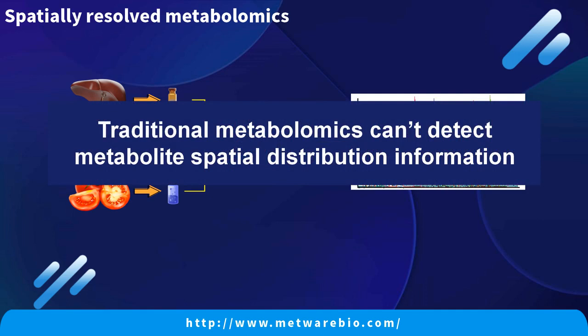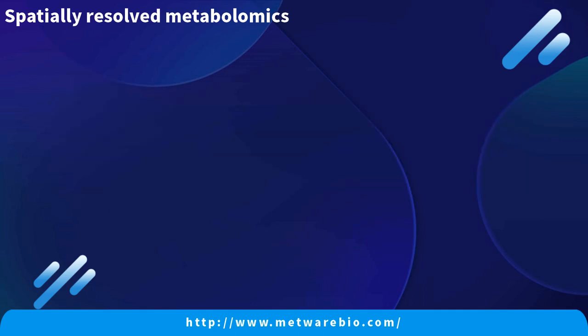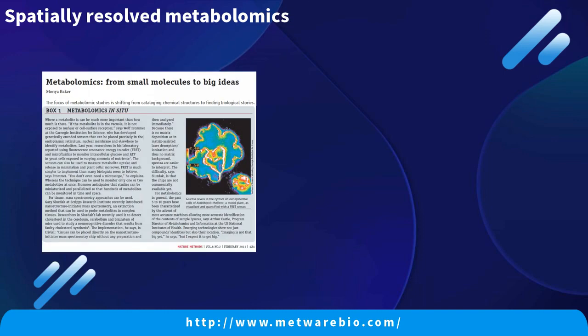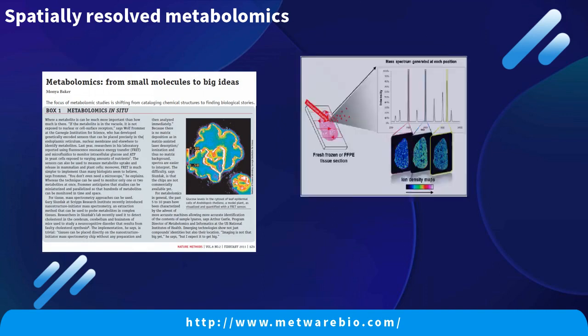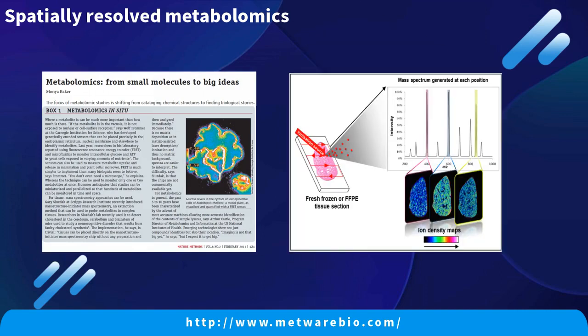That's why we need to do spatially resolved metabolomics experiments. As we discussed last time, spatially resolved metabolomics is used for imaging detection and in-situ analysis in biological tissues. It can capture the change rules in spatial and temporal distribution of metabolites related to physiology and pathology. The main features are spatial and temporal distribution, allowing the role and mechanism of metabolites in life activities and pathological processes to be further understood.